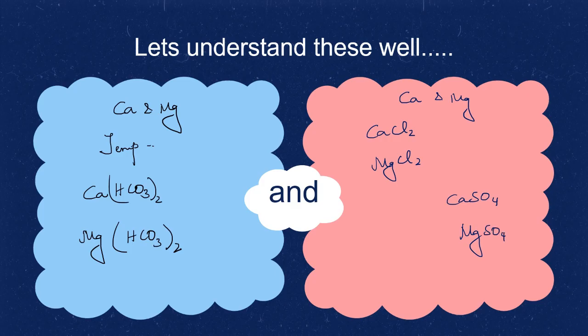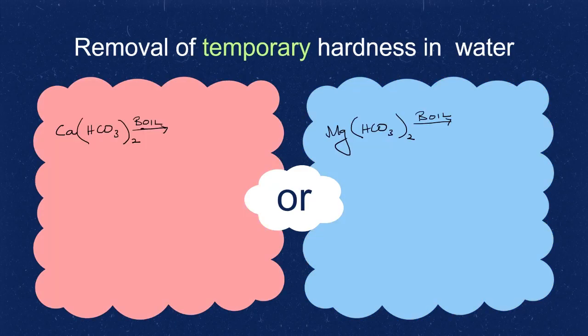To remove temporary hardness of water, we know that these are the substances which are there: Ca(HCO3)2 or Mg(HCO3)2.